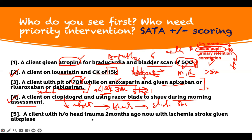A client with a history of head injury two months ago, now with ischemic stroke and being given alteplase. Think about it. You have to know the contraindications and indications for alteplase. Yes, if you have a stroke, we give you alteplase to open it up. But this patient has a head injury two months ago.